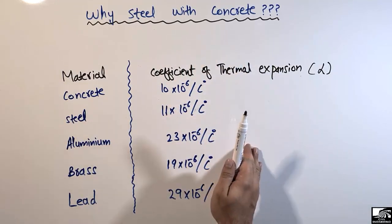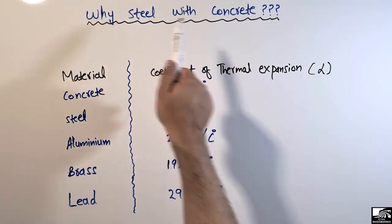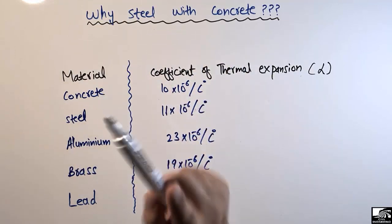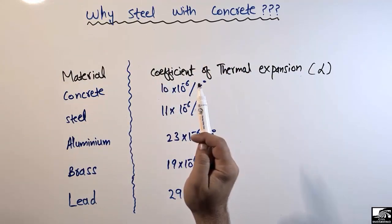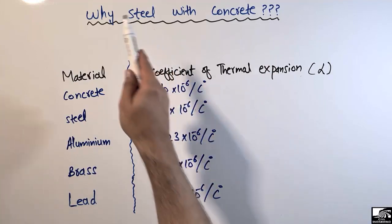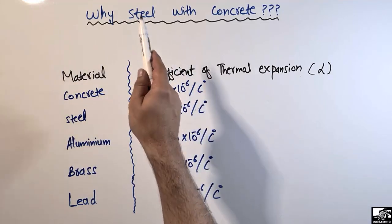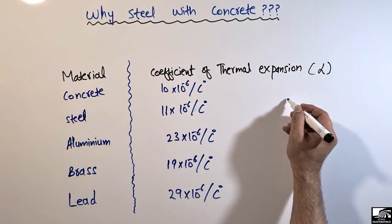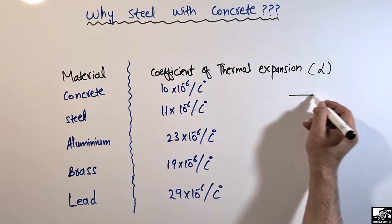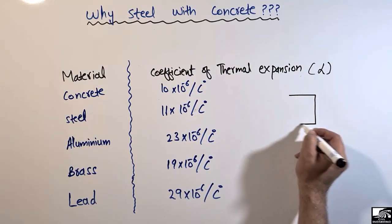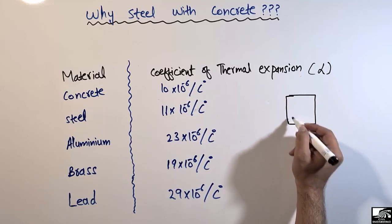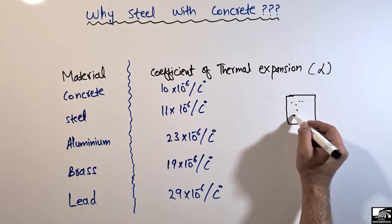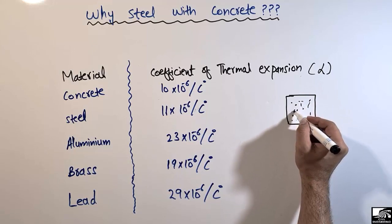In this lecture, we are mainly focused on the reason why we provide steel with concrete. There is only one reason that satisfies the purpose of the steel bar inside the concrete. If you look at the concrete — this is a section of any beam, let's suppose — we provide concrete throughout the section.